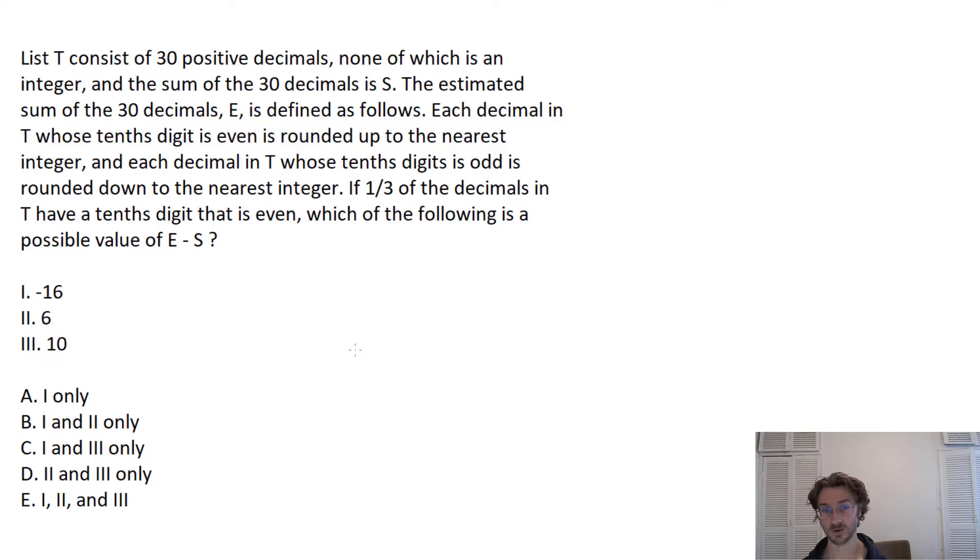And each decimal in T whose tenths digit is odd is rounded down to the nearest integer. If one-third of the decimals in T have a tenths digit that is even, which of the following is a possible value of E minus S?